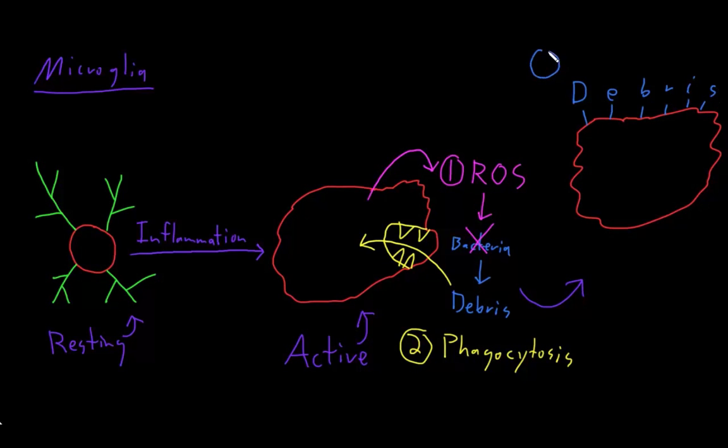Lymphocytes will come in and they will recognize or look at these pieces of the debris that the microglia ate and is now presenting on its surface for the lymphocyte. Any molecule that a cell of the immune system can recognize, we call an antigen. So this function is called antigen presentation.